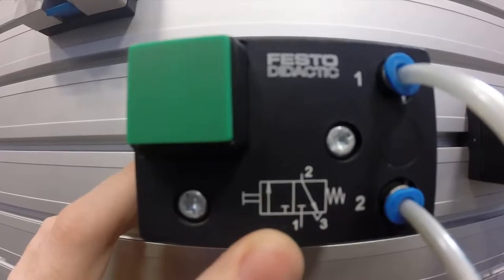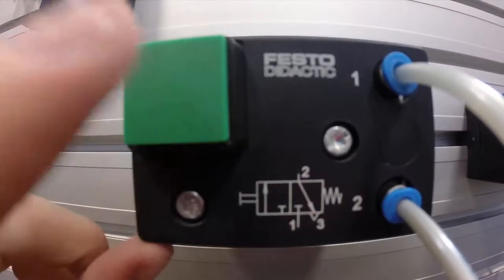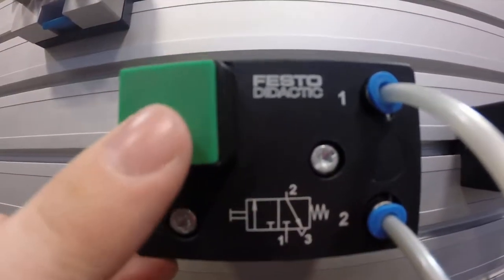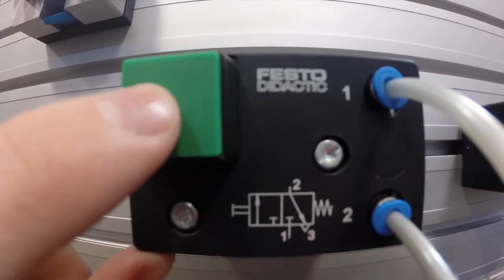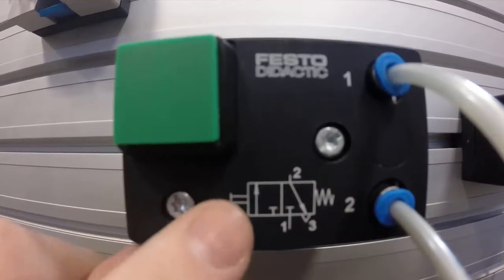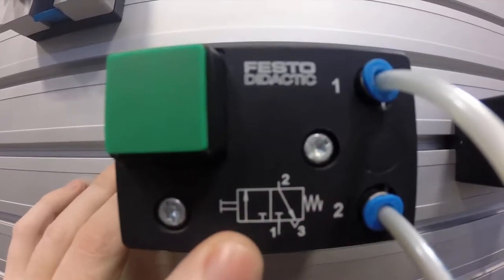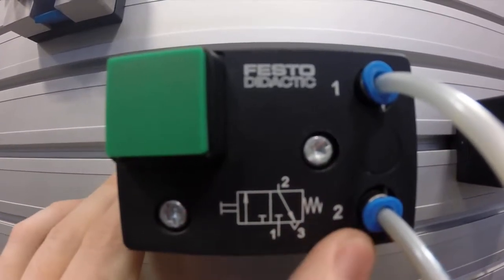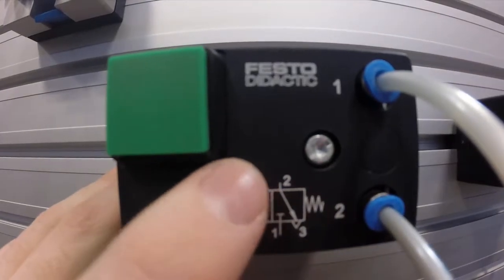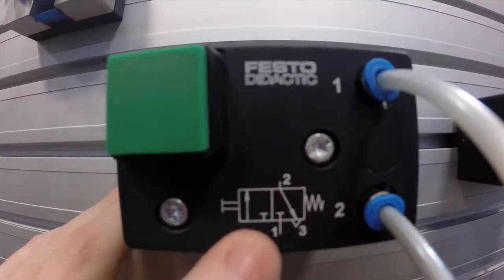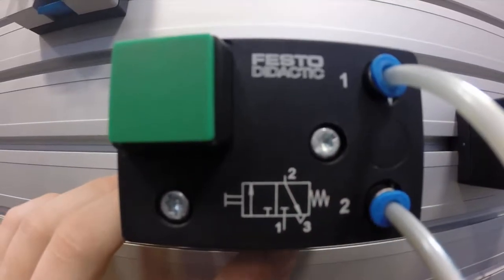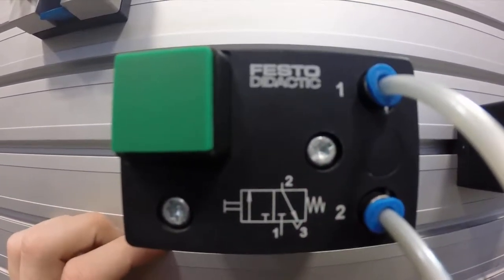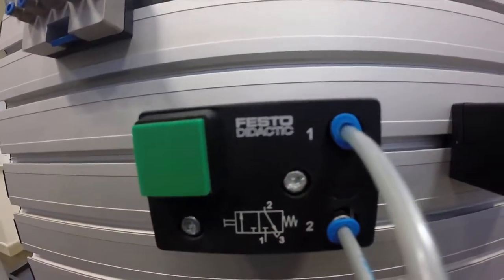If you look, it is push button operated and spring return, so for it to stay operated we need to keep our finger pressed on the push button. We've got the numbers representing our ports for what each port does - port number two is the output, port number one is your supply, and port number three is our vent, venting from underneath just out into the atmosphere.